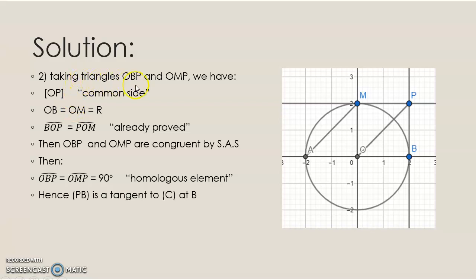We take two triangles OBP and OMP. We have OP is a common side, and OB and OM are equal radii.